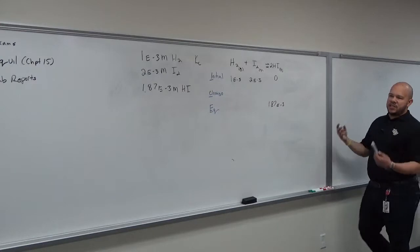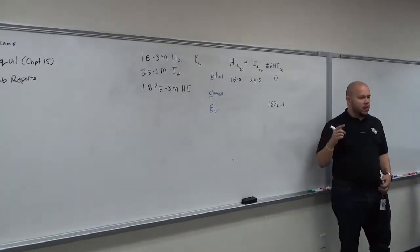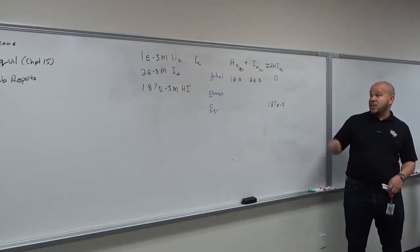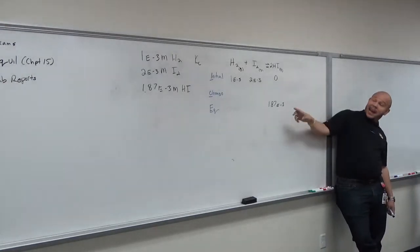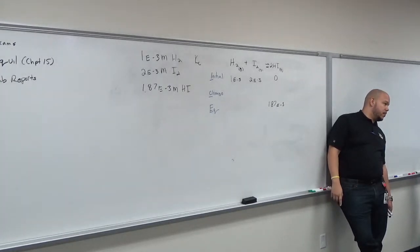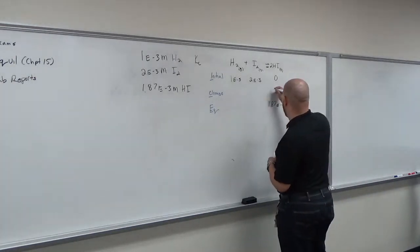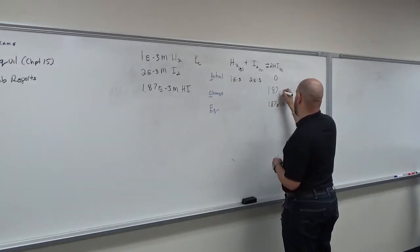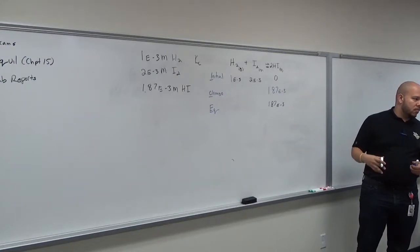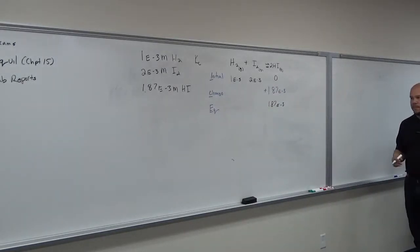From the information given, we can fill in the change for products. If we started with zero and ended at 1.87×10⁻³, the change must be +1.87×10⁻³. The change row should always have a sign — positive or negative.